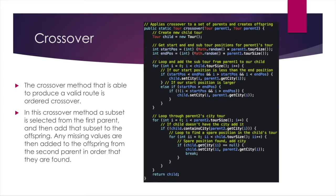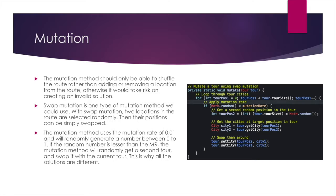We move on to the next method, which will be the mutation method. So the mutation method should only be able to shuffle the route instead of removing or adding a location because this would risk creating an invalid solution. So to do this genetic algorithm, a swap mutation is one type of mutation we could use. With swap mutation, two locations in the route are selected randomly and the positions of them are swapped.